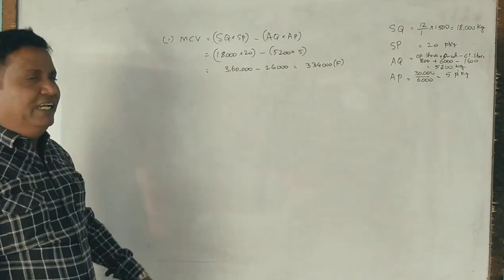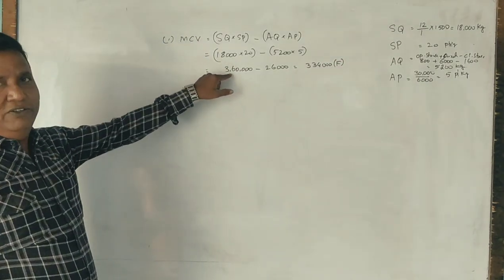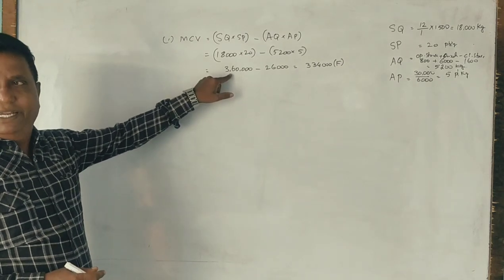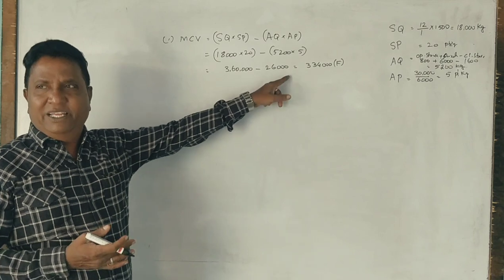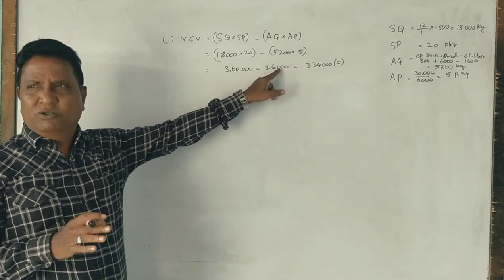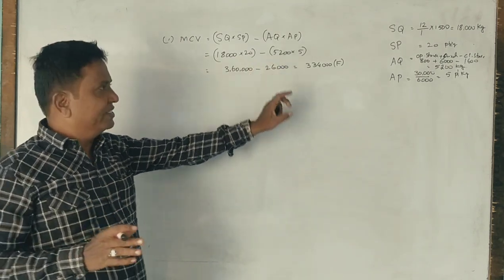3,34,000 favorable. Why is it favorable? Because we thought of 3,60,000 to incur for material costs, but how much we incurred? Only 26,000. That's why. This is nowhere connected to this question, no problem.